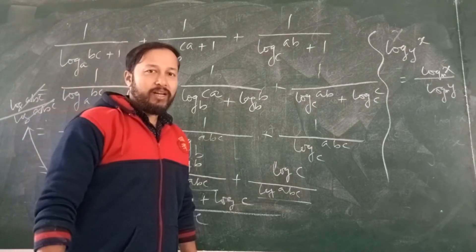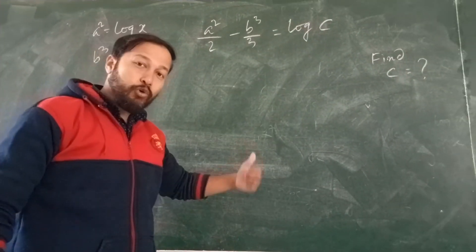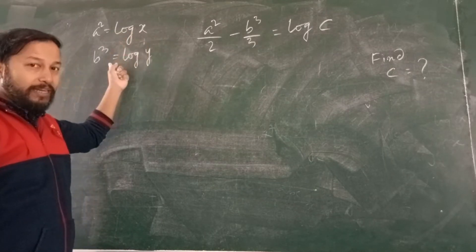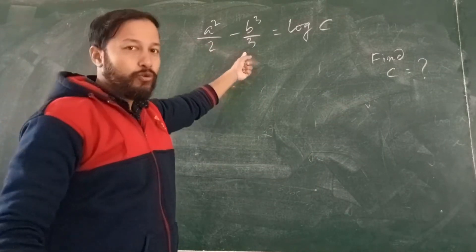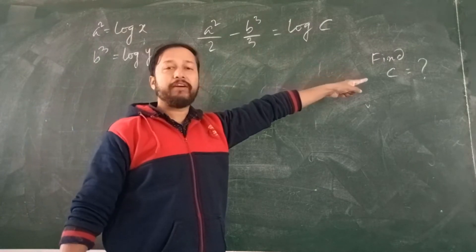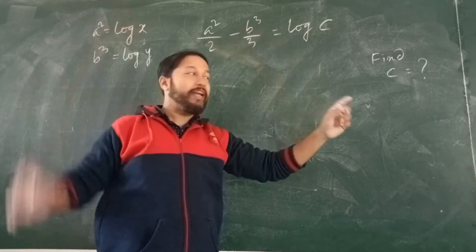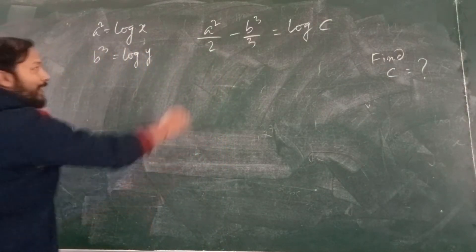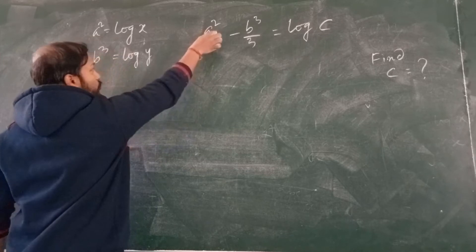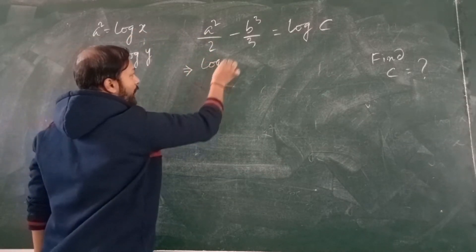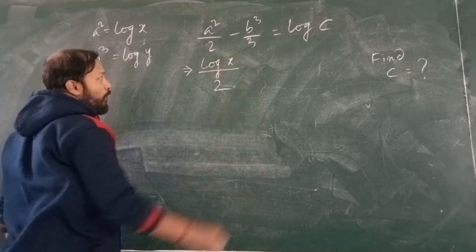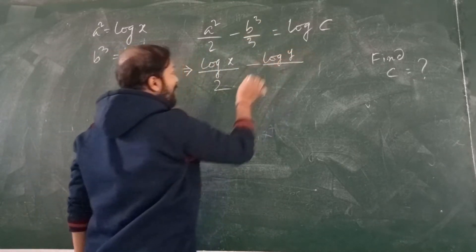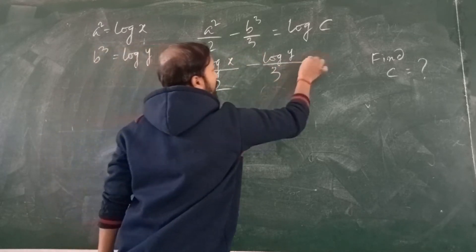The answer is 1. Let us move to the next question. In this question, A² is given, B³ is given, and a third condition is also given. We have to find the value of C. So: log x divided by 2 minus log y divided by 3 equals log C.